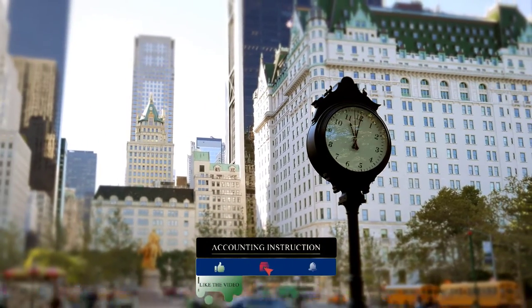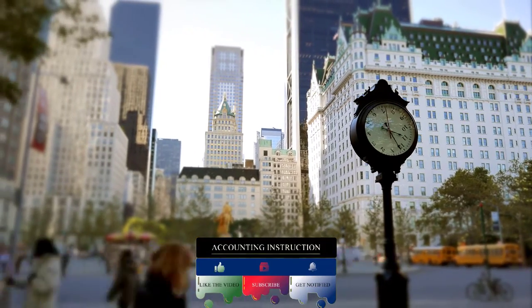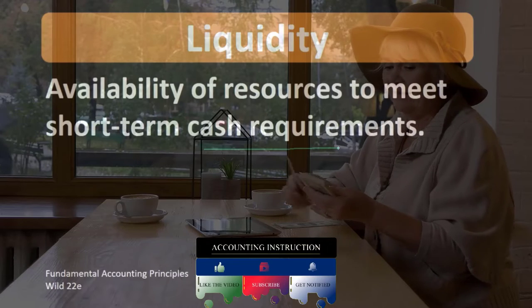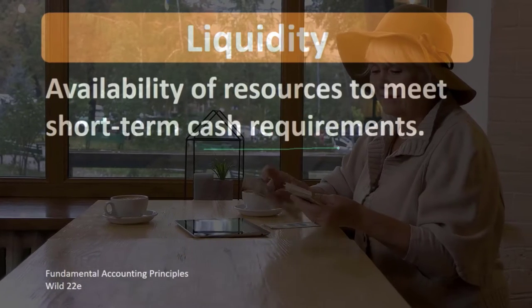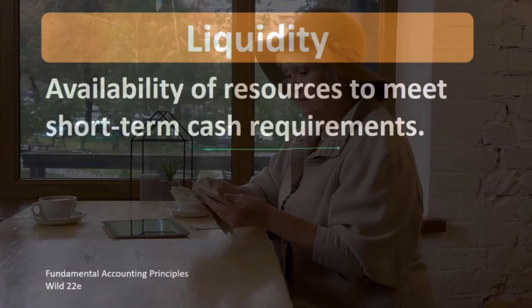And what do we need in order to pay off our current obligations, the debt that we owe in terms of accounts payable and loans payable? That's going to be the idea of liquidity. Do we have liquid enough assets to pay for those types of obligations?